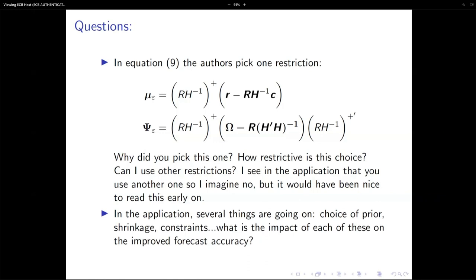On the application: I really like it because it showcases how powerful the methodology is — you can have hard and soft constraints on observables or shocks. However, many things are going on simultaneously: the choice of prior, shrinkage from a large Bayesian model, and the impact of different constraints on the conditional forecast. It was very difficult to understand where the resulting forecast was coming from. I would like to see each constraint's impact isolated, showing how they individually and collectively build up to the resulting forecast.